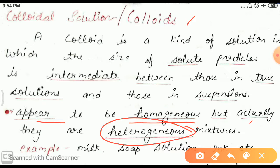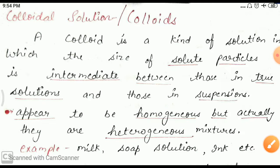If we observe through a high power microscope, we can identify that the mixture is not homogeneous but rather heterogeneous, because the particles are not uniformly distributed. Examples of colloidal solutions are milk, soap solution, ink, blood, and solutions of synthetic detergents — these are all examples of colloidal solutions.